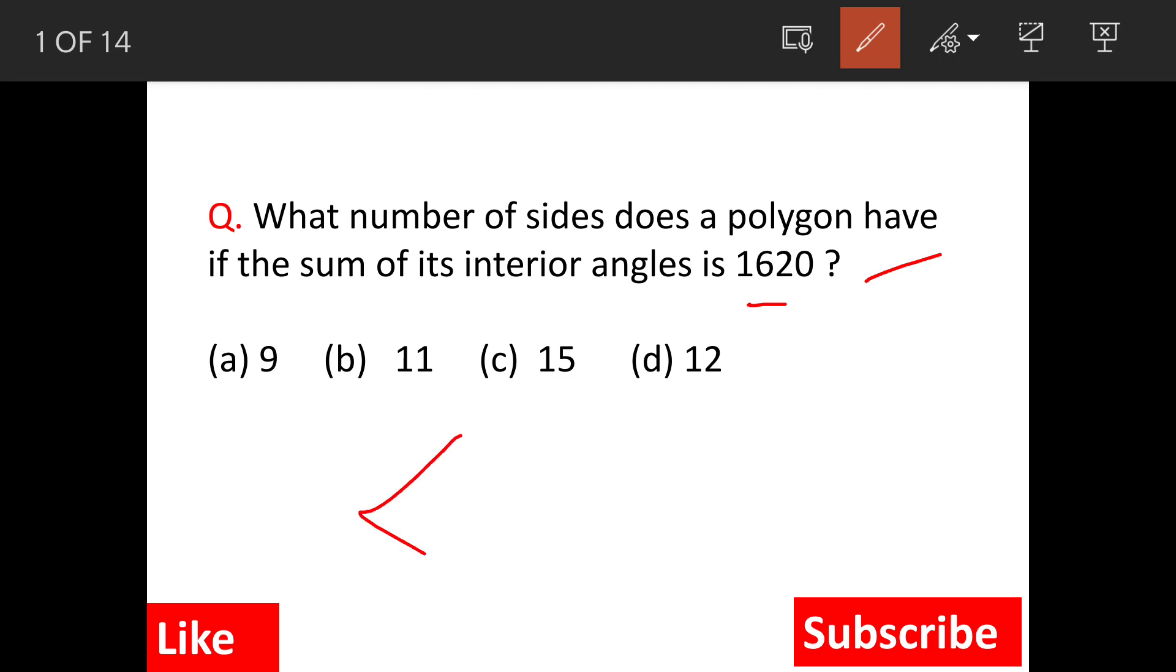Now what is a polygon? A polygon is basically a shape formed by straight lines. This is a regular shape. A triangle is also a polygon as per definition. Now these are the angles which are interior angles.